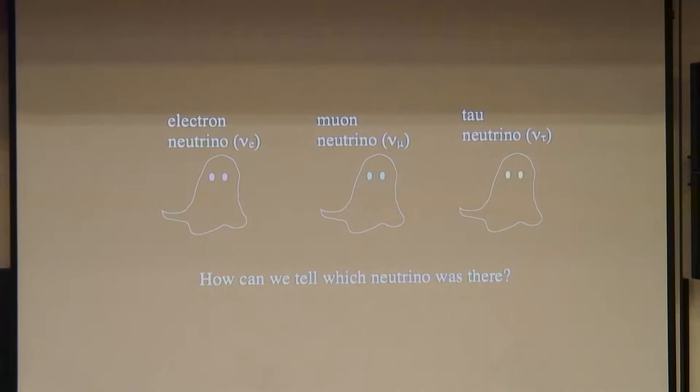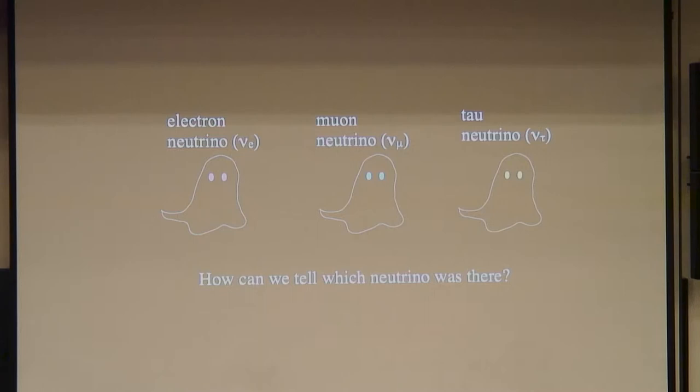Neutrinos come in three different varieties — the word we use is flavors. It would be more fun if we named them like chocolate, strawberry, and vanilla, but we didn't. We named them the electron neutrino, the muon neutrino, and the tau neutrino. So if you cannot see a neutrino, how do you know what type was actually there?